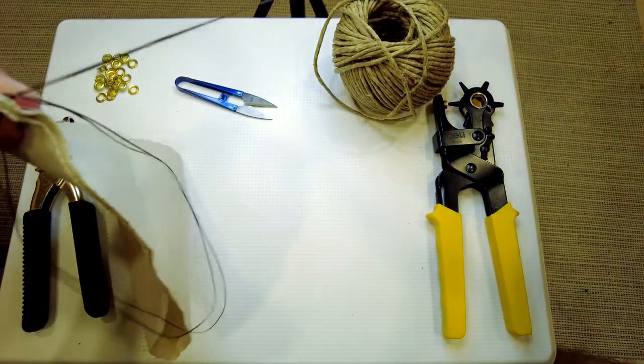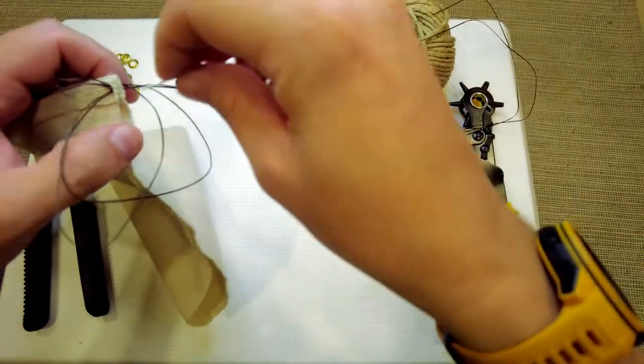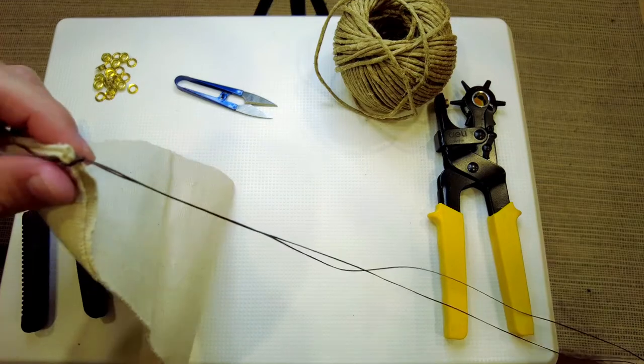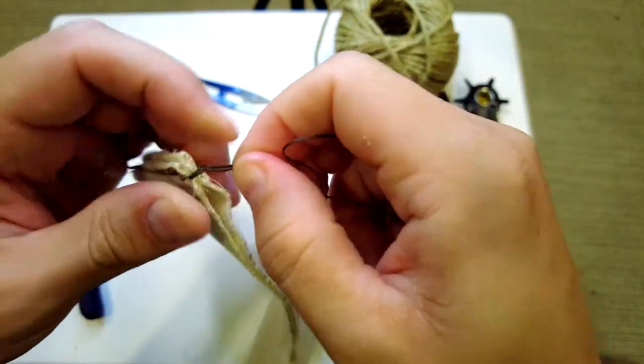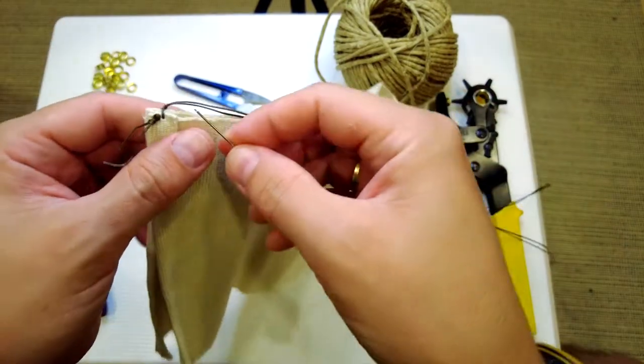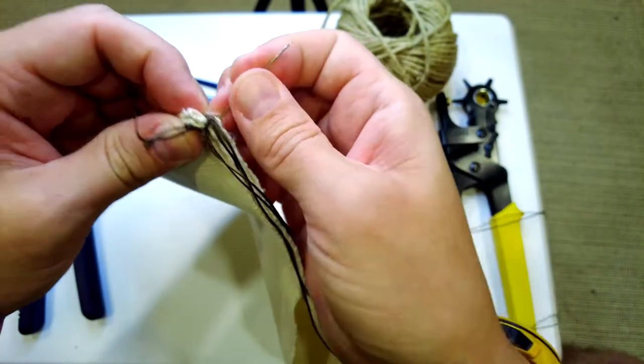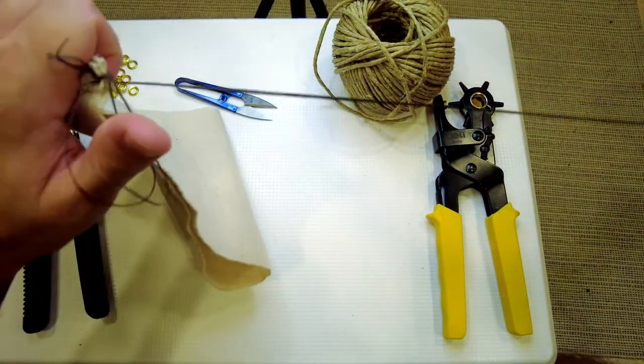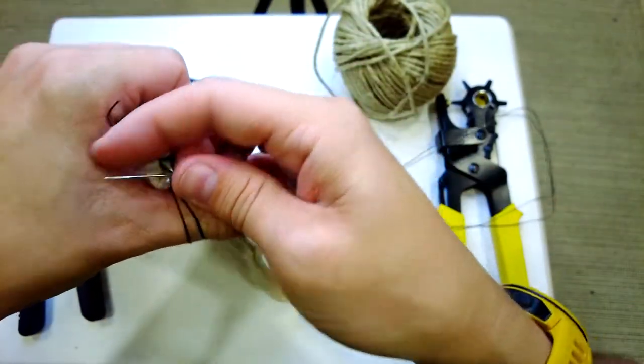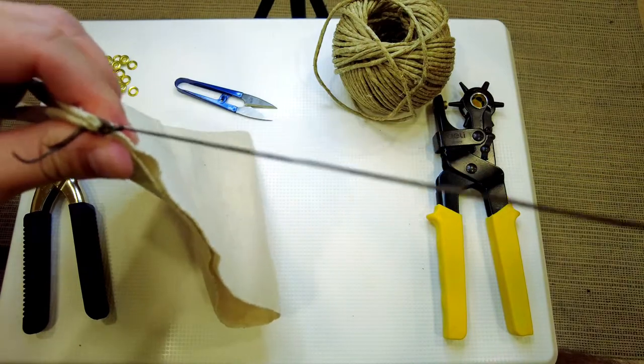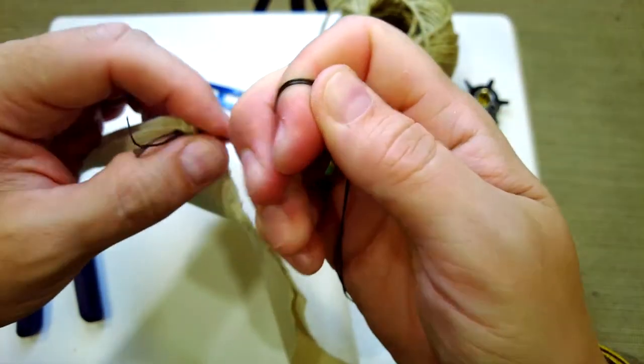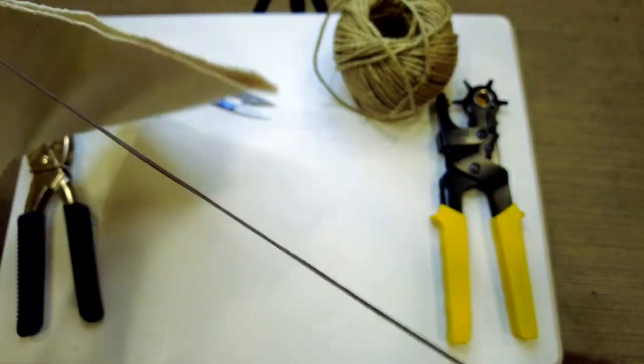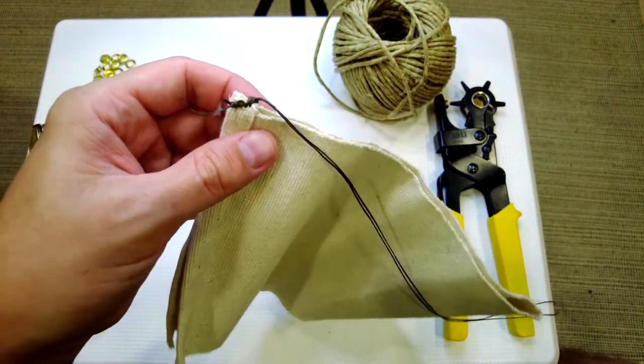As I pull this through, I'm actually going to pass the needle again through this loop, which will create a little knot on there. If you want to use a thimble, you can. Again, I'm just going to pass it through the loop to get that knot. It's really important, especially at the top of the bag for it to be very secure. I don't want the stitch coming open and spoiling our bag.